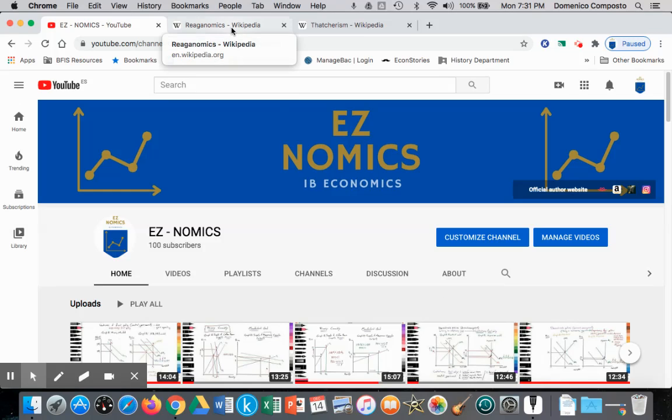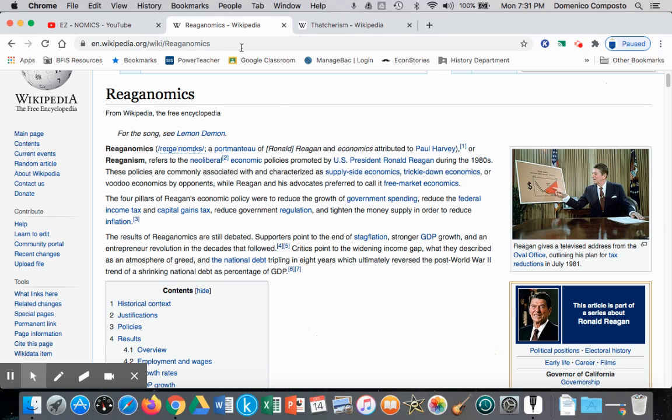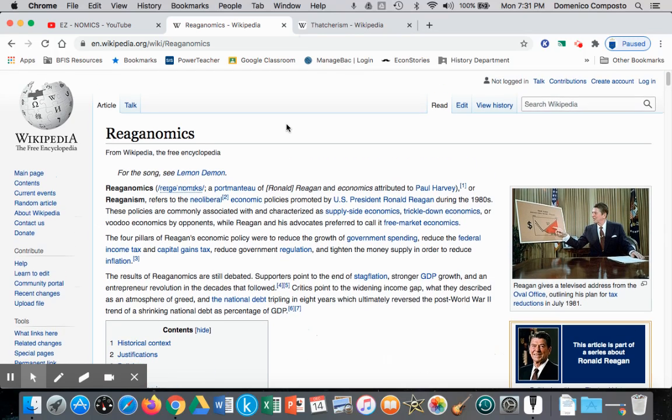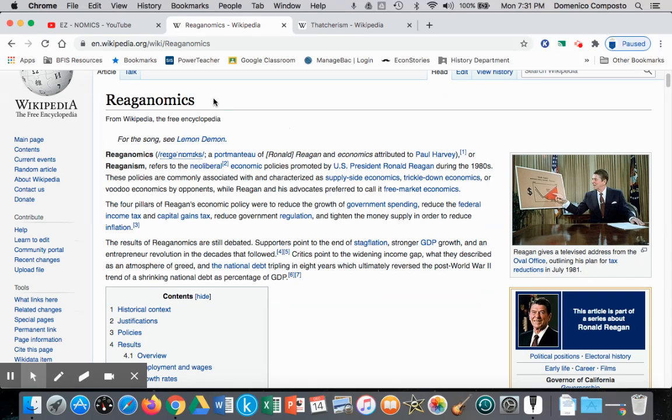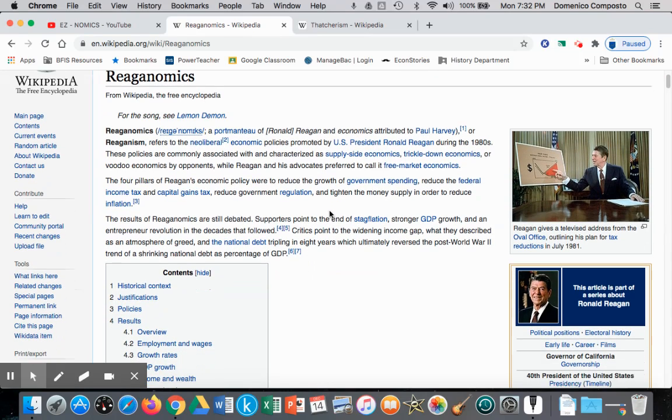Some historical examples of market-based supply-side policies was Ronald Reagan during his administration in the 1980s. His economic policies were referred to as Reaganomics, where essentially he wanted less government intervention, basically have the government pull back from the economy, allow free market forces to take hold, to deregulate, and also to decrease government spending in terms of the provision of public goods and services, and instead have the free market and private firms provide those goods and services.